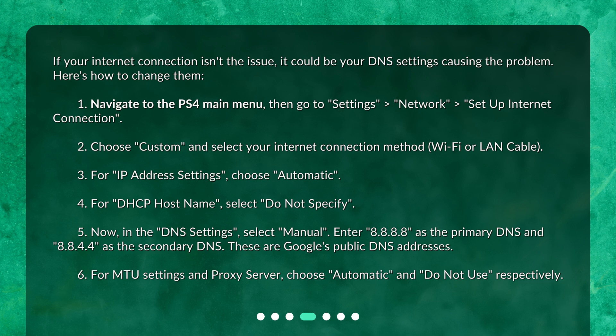4. For DHCP hostname, select Do Not Specify. 5. Now, in the DNS settings, select Manual. Enter 8.8.8.8 as the primary DNS and 8.8.4.4 as the secondary DNS. These are Google's public DNS addresses. 6. For MTU settings and proxy server, choose Automatic and Do Not Use, respectively.